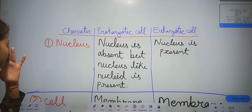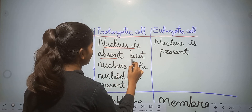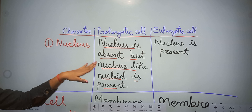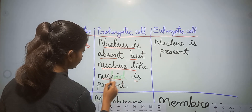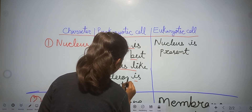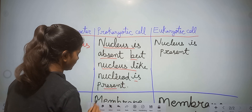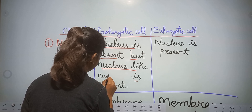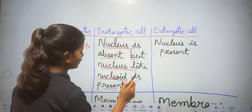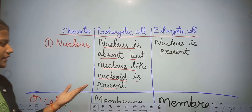Our first character is nucleus. In prokaryotic cell, nucleus is absent, but a nucleus-like structure called nucleoid is present. The nucleoid acts as the nucleus in prokaryotic cells.